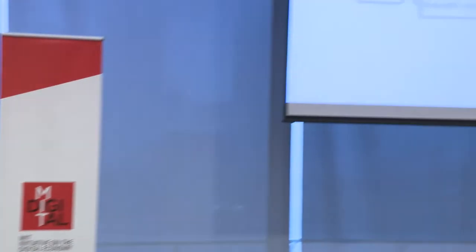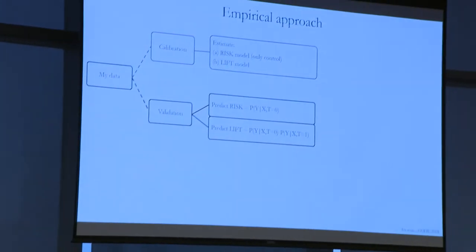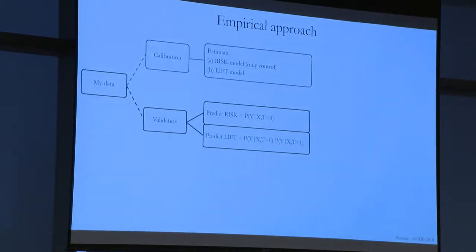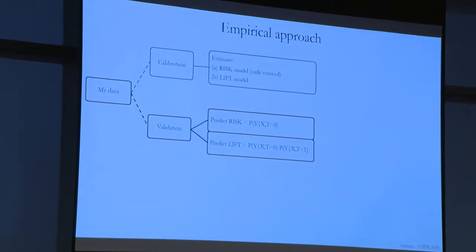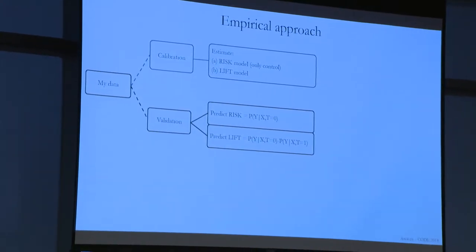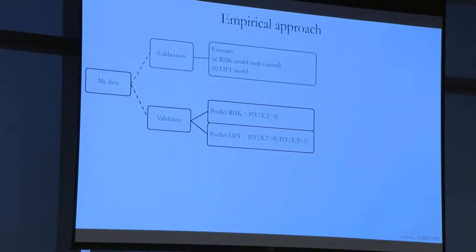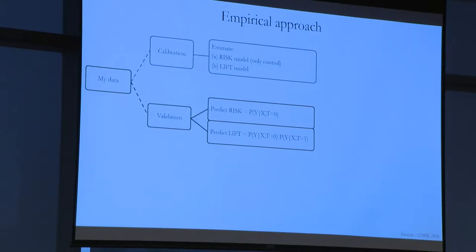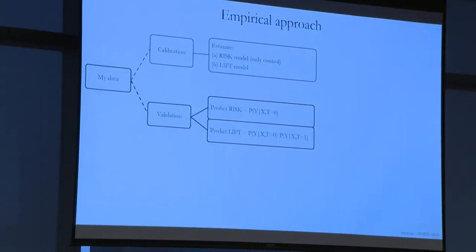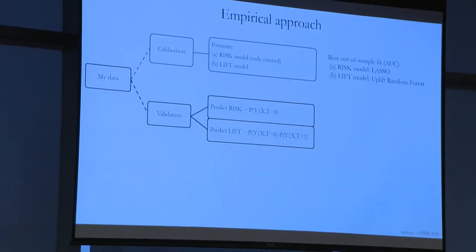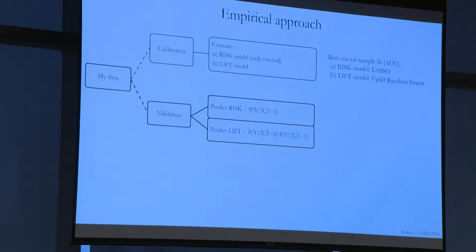So this is what I did with the data. A firm gives me the fully randomized experiment. I'm going to split those into two buckets. The first bucket I'll use to build the best model I can to figure out your propensity to churn, and the other one I'll use a random forest to estimate your lift.